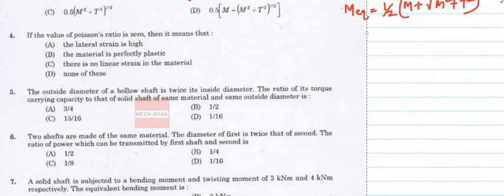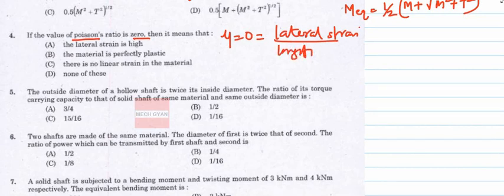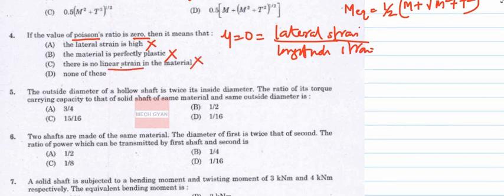Question 4: If Poisson's ratio μ = 0. Since μ = lateral strain / longitudinal strain, μ = 0 means lateral strain is zero. Option A (velocity does not change) and others are wrong. The correct answer is option D.